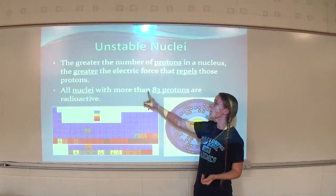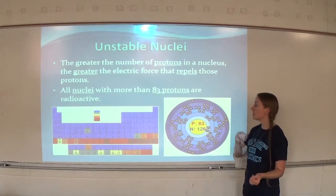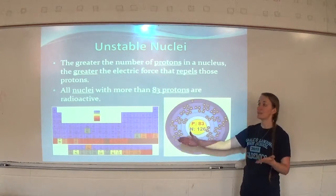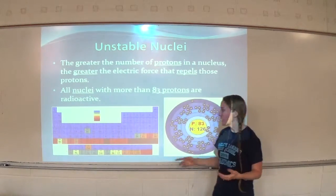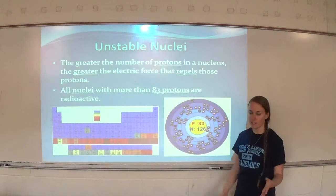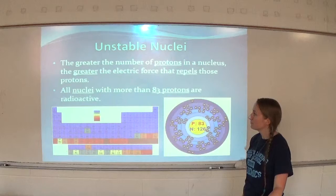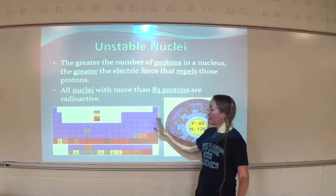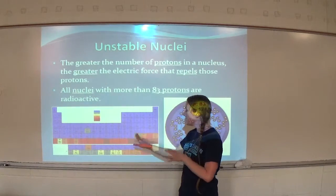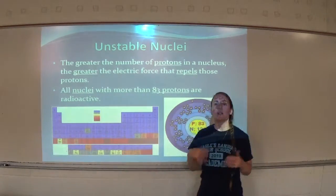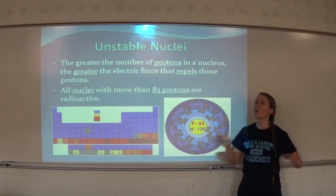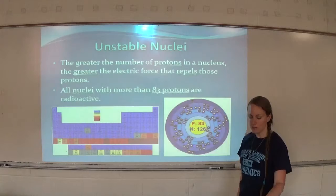All nuclei with more than 83 protons are radioactive. Once you get to element number 83 on the periodic table, everything past that is radioactive. Element 83 is bismuth, so bismuth is our last non-radioactive element. There are some isotopes of elements with 83 or fewer protons that are radioactive, but any nucleus with more than 83 protons — all of its isotopes are radioactive.